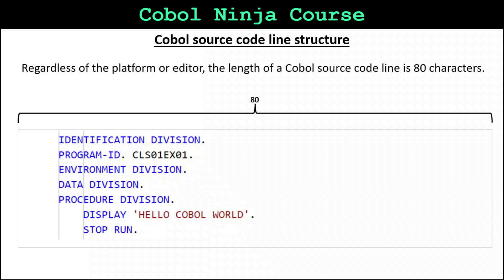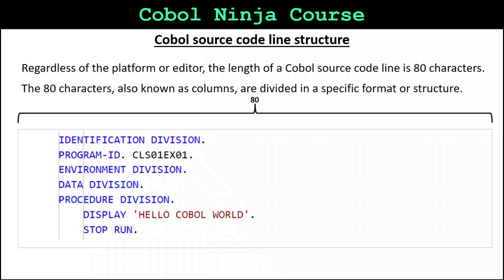One more thing to point out before we begin editing: regardless of the platform or editor, the length of a COBOL source code line is 80 characters. The 80 characters, also known as columns, are divided in a specific format or structure.